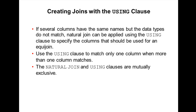Use the USING clause to match on one column when more than one column matches. Note that natural join and the USING clause are mutually exclusive — you cannot use them together.